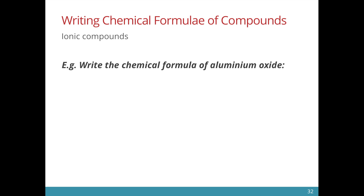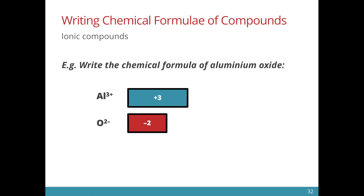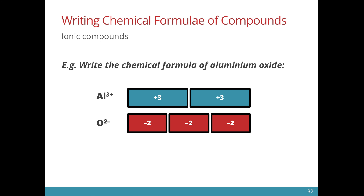Let us look at aluminium oxide. Aluminium forms the Al3+ ion, while oxygen forms the O2- ion. In order for the charges to balance, we have to find the lowest common factor between three and two. This means we have to put in two aluminium ions and three oxide ions in order for the charges to balance. Therefore, the chemical formula of aluminium oxide is Al2O3.